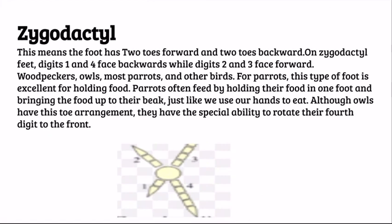For owls, the zygodactyl arrangement helps them perch, hold food, and grab prey. Although owls have this toe arrangement, they have the special ability to rotate their fourth digit to the front.